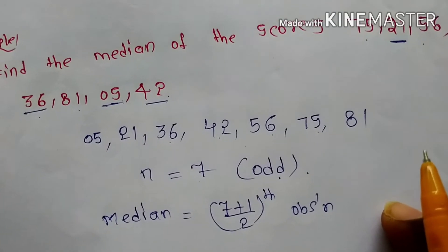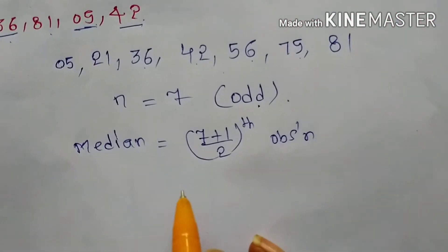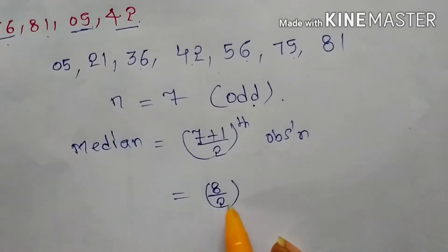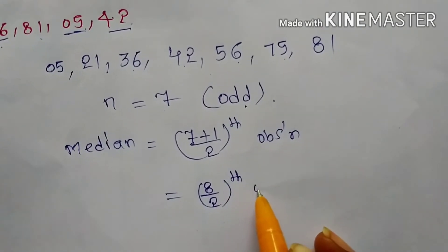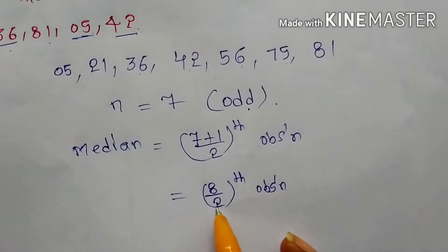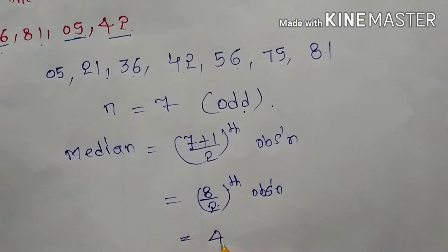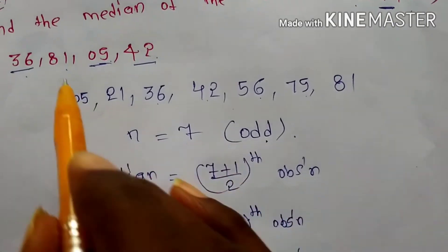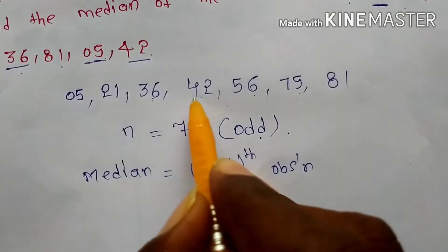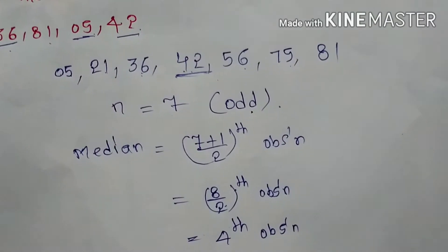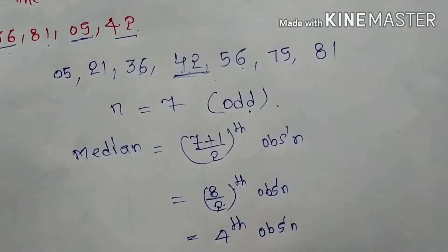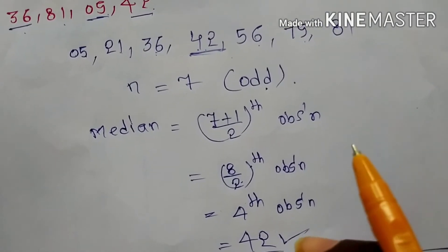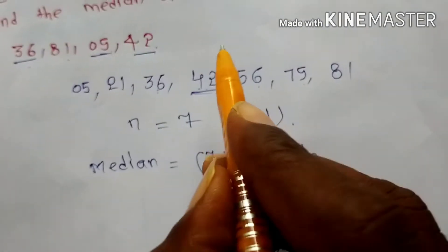That means 7+1 equals 8, so 8/2 equals the 4th observation. Counting: 1, 2, 3, 4 — the 4th observation is 42. Therefore, 42 is the median of the given scores.